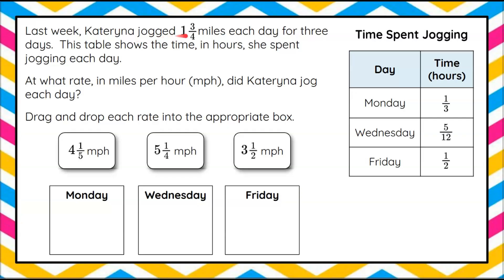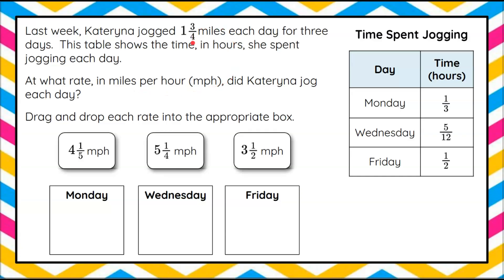Last week Katarina jogged one and three-fourths miles each day for three days. This table shows the time in hours she spent jogging each day — Monday, Wednesday, and Friday. At what rate in miles per hour did Katarina jog each day? You're going to drag and drop each rate into the appropriate box, determining which one corresponds to Monday, Wednesday, and Friday — the unit rate given one and three-fourths miles per day and the given jogging time.